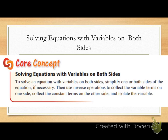Next step: use inverse operations to collect the variable terms on one side. Then collect the constant terms on the other side and isolate the variable. I want to isolate my variable terms on one side first. After I do my variables, then I do my constants on the opposite side, and then I can isolate my variable — that is, solve for it.